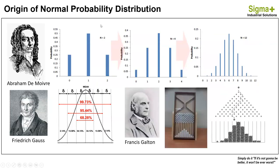The origin of the normal probability distribution all started with Mr. Abraham de Moivre, who observed that as the sample size of the binomial probability increases, the closer it will form a normal bell distribution. This was later developed by Mr. Frederick Gauss, who performed more studies and presented the normal distribution functions that depend mainly upon the mean and the standard deviations.